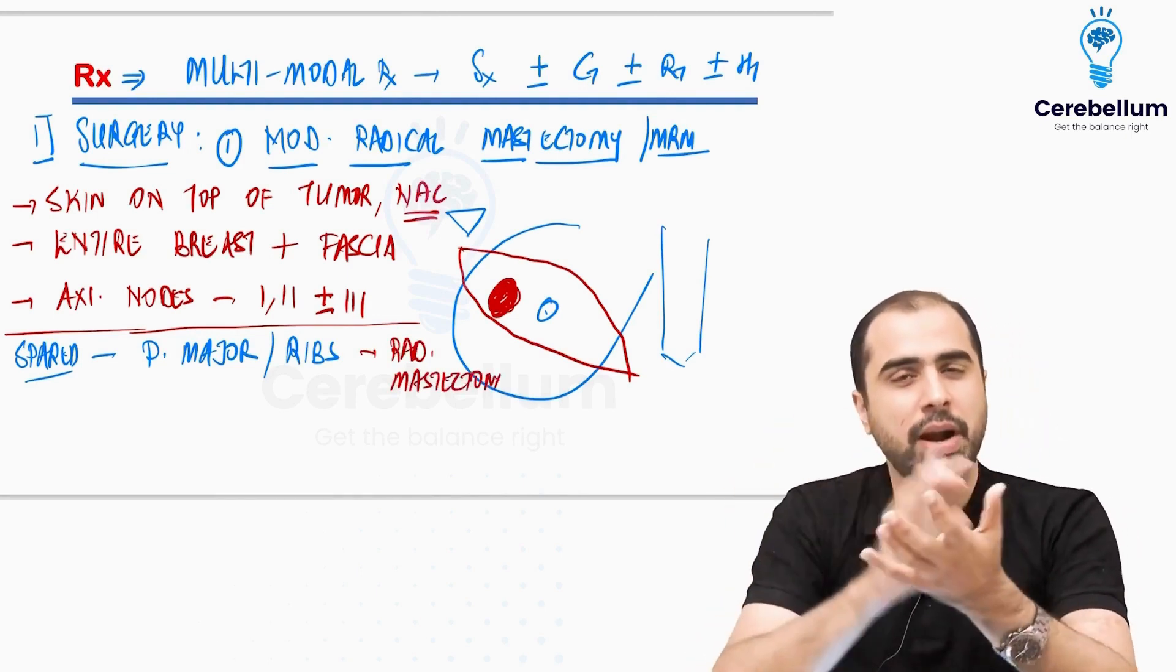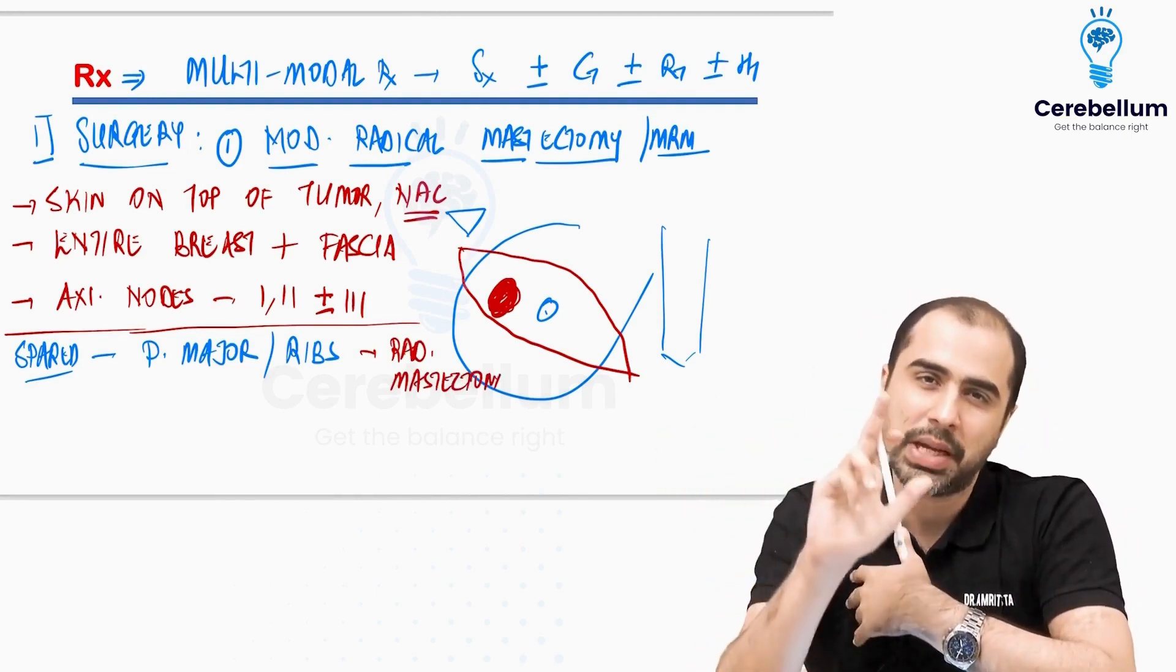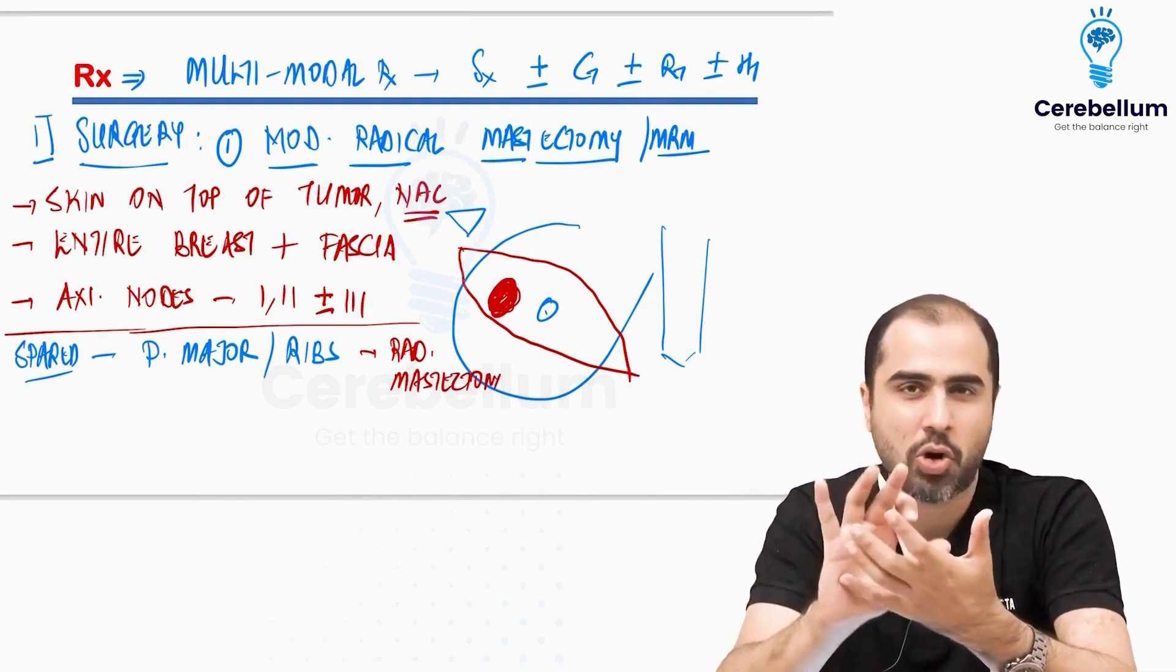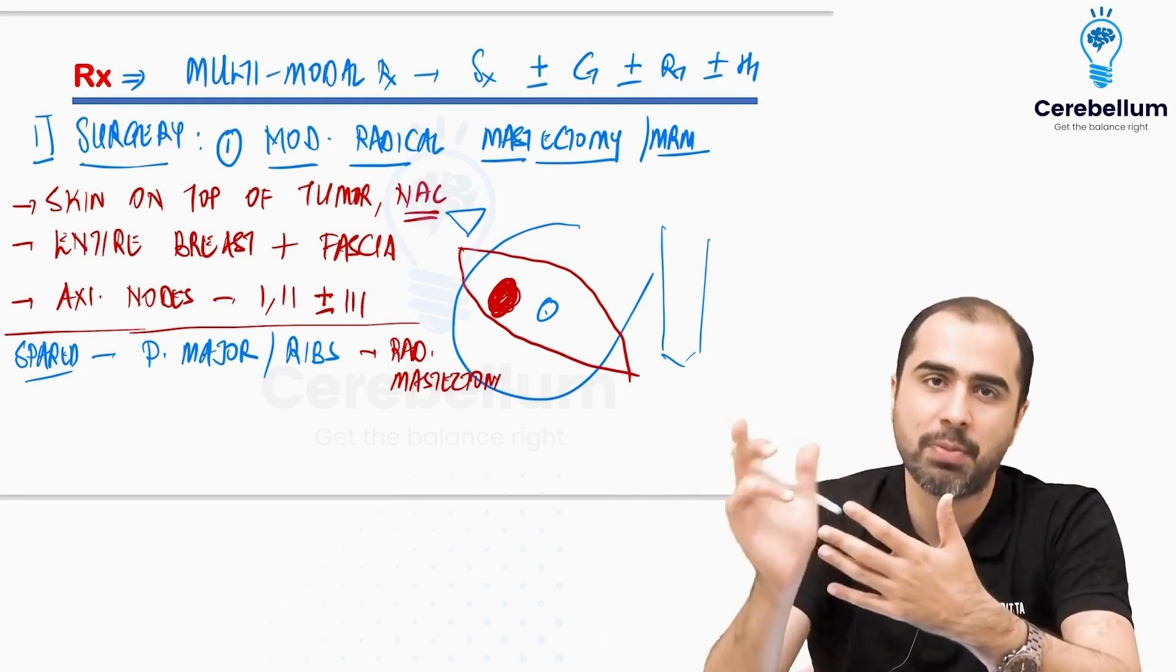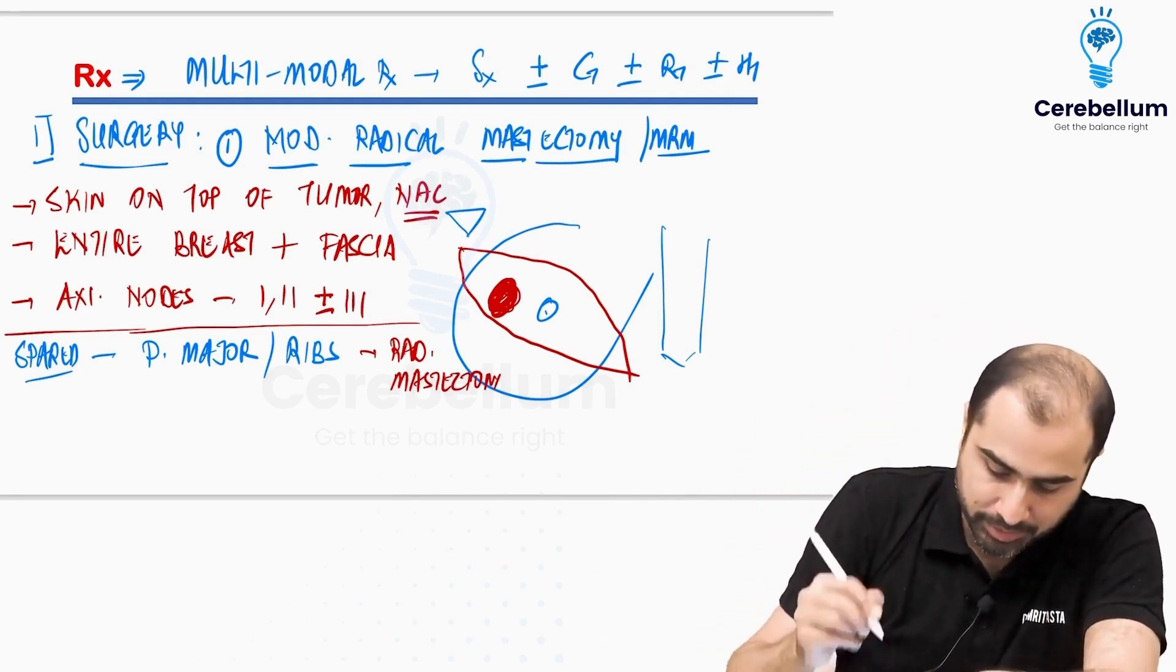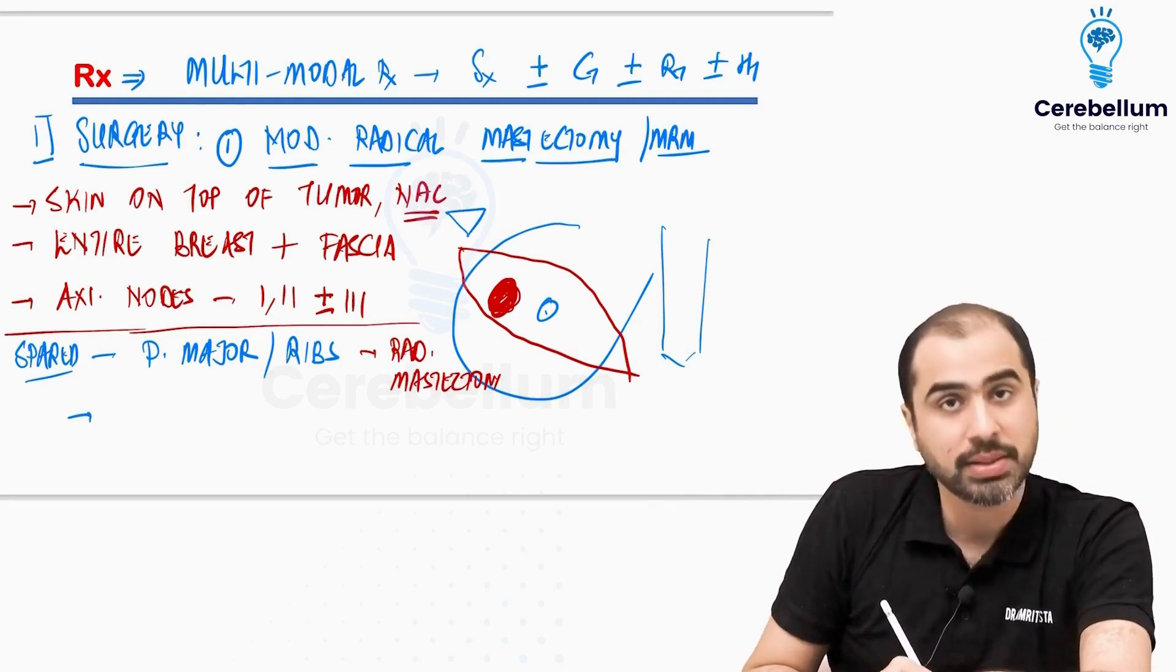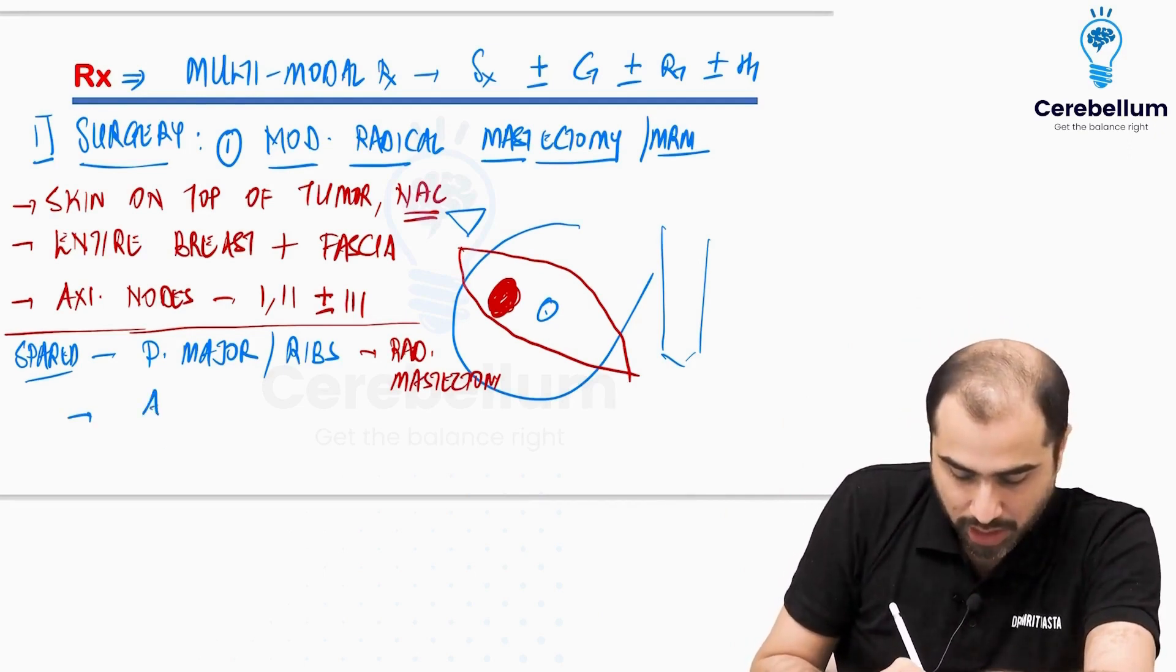So if they ask you, difference between radical and modified radical, pec major is preserved. Pec minor may be removed, may not be removed. That depends on what type of MRM you are doing. Further, you are going to preserve some nerves and some vessels, which is given by the mnemonic ABCD.